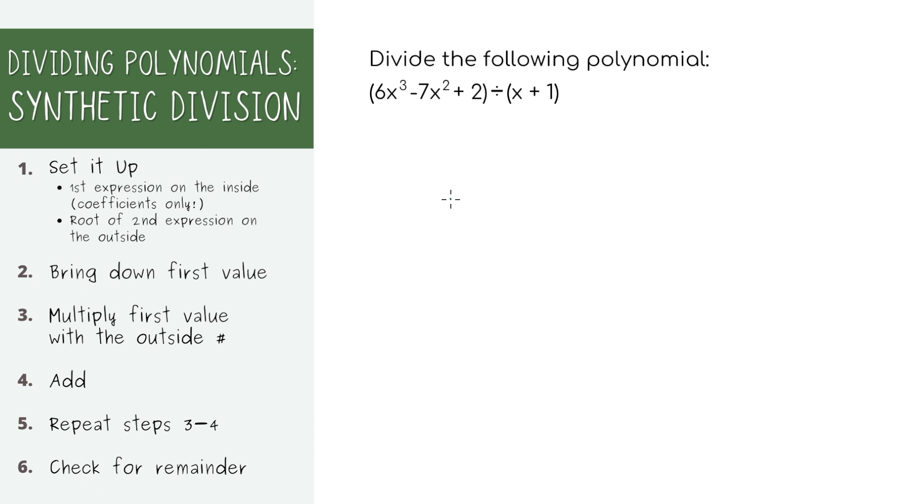All right, now we're going to use synthetic division to do the same exact problem. The first step again is just to set it up. We're going to put the first expression on the inside, which is the same as long division. But for synthetic division, we just use the coefficients. For the outside part, it's a little different. We're actually putting the root of the second expression on the outside. Usually for synthetic division, you'll get an expression in this x minus a format with no coefficient in front of the x. So you can actually just take the last number and flip the sign. In this case, it's negative one.